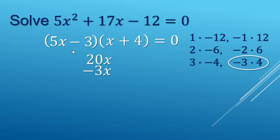Because when I multiply this back out, 5x times 4 makes 20x. Negative 3 times x is negative 3x. Add those up, and you end up with a positive 17 for the x term in the middle there.